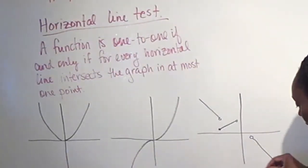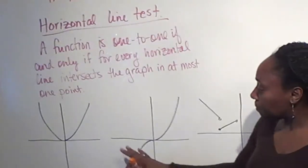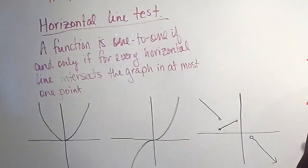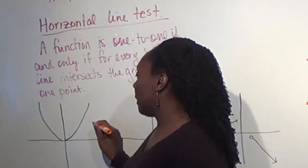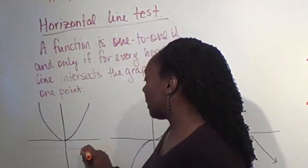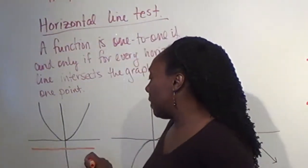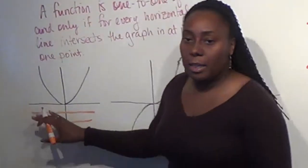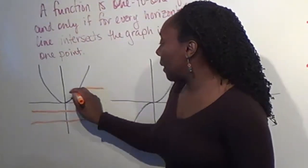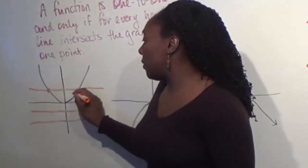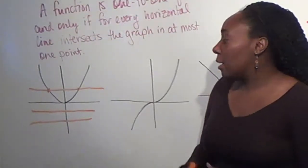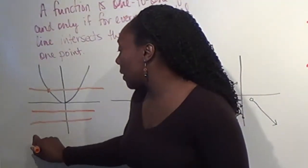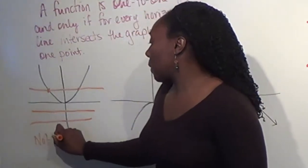Here I've got a couple different functions, and we want to determine whether or not they pass the horizontal line test. This first one, we can see easily if I pick horizontal lines down here, it passes because I'm not hitting anything. However, if I hit up here, I can see there are two points where the horizontal line intersects, so this would be a function that is not one-to-one.